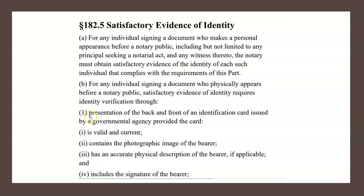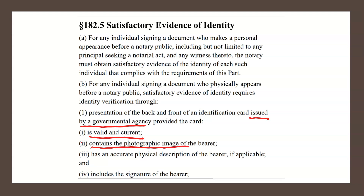Subsection 1: presentation of the back and front of an identification card issued by a governmental agency. Provided that the card — subsection I — is valid and current, and subsection II — contains the photographic image of the bearer.